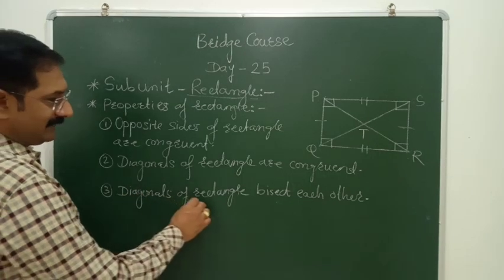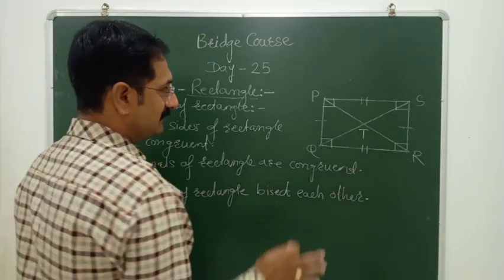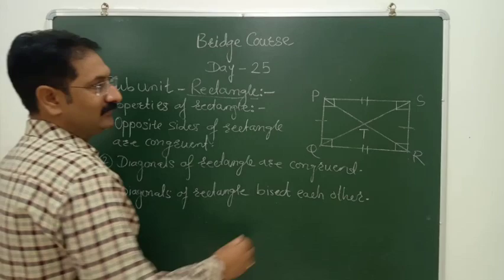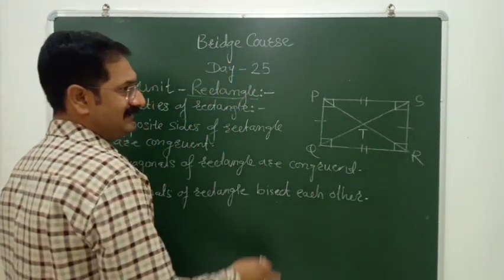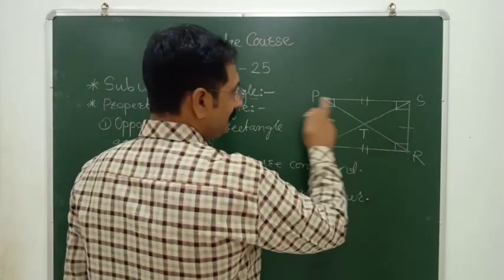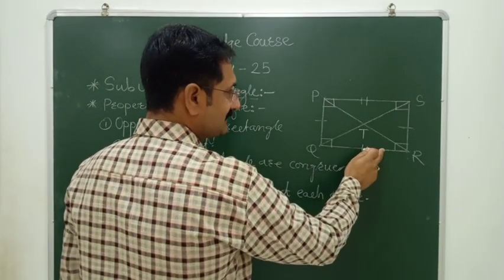Diagonals of rectangle bisect each other. Third property. Dohni ekma ka na bisect karta, manje QS and PR intersect and bisect each other.